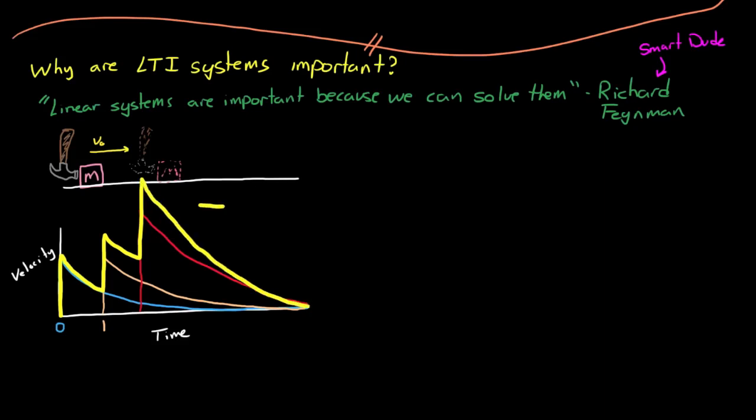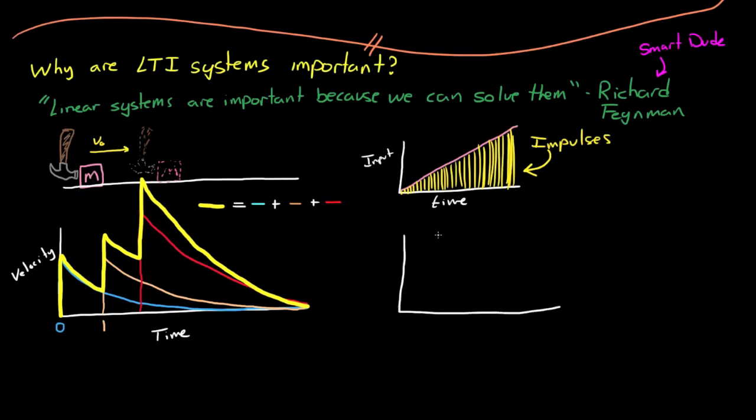So you can see that this method works easily with one or two impulses. But what if we have an input into the system that wasn't just made up of one or two discrete impulses, but was a continuous ramp? And further, if we broke that ramp into a series of sequential impulses, then with an LTI system, we can say that the output is the summation of the responses to each of those individual impulses.